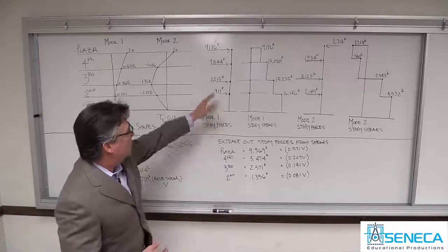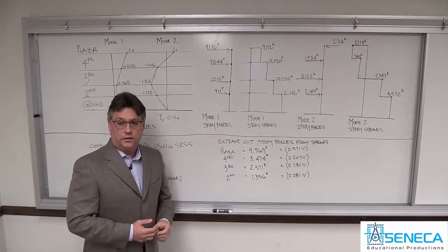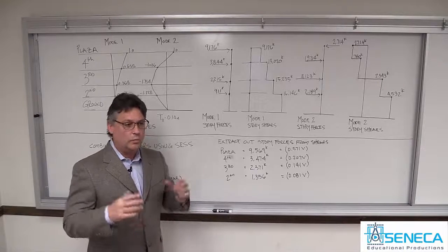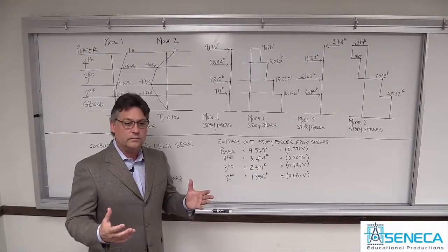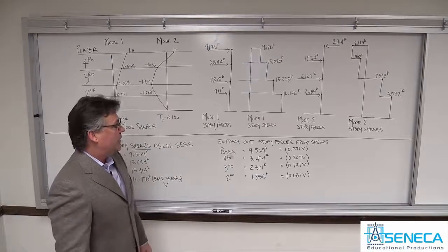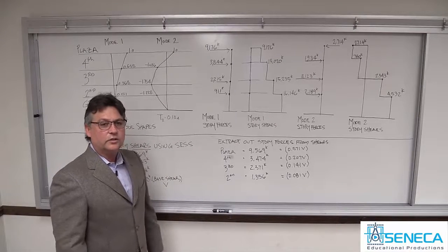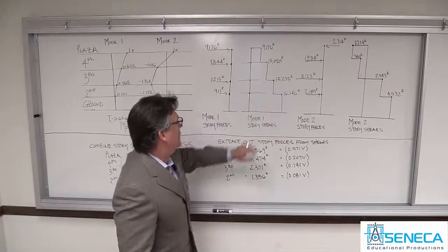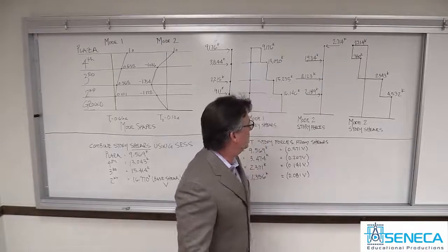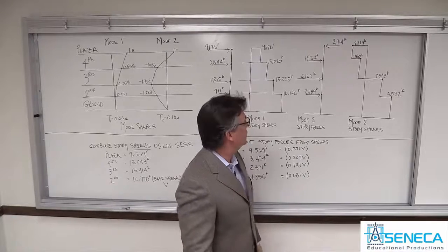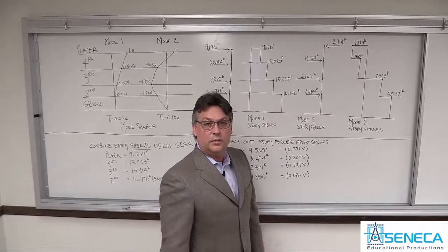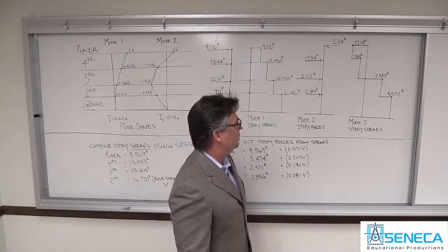Those forces are not really critical. They are not what we care about when we're doing a global vertical distribution design of a building. We actually care much more about the story shears. If you're just looking at code equations, it's not obvious that that's what we care about most. So the first thing you would do is calculate the story shears. Move over to the second mode, find the second mode story forces — those are not critical and not very useful on their own. But they create story shears that become extremely important to us and to what the code will develop.